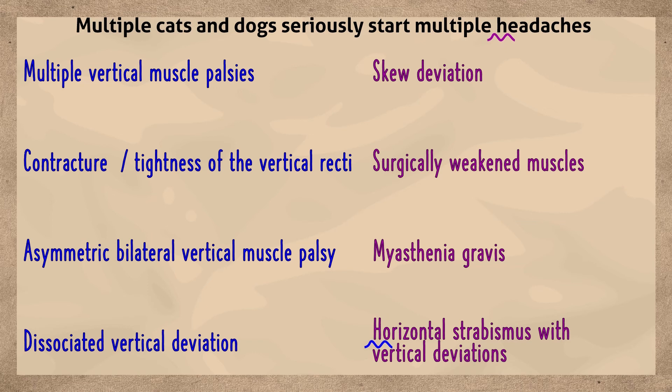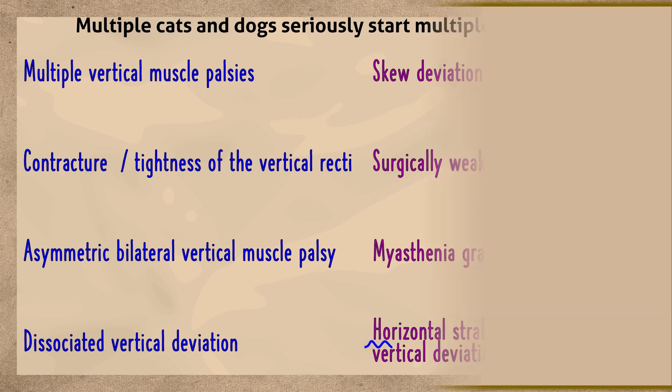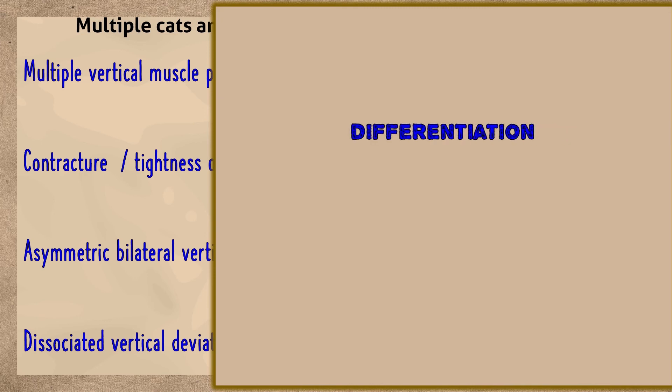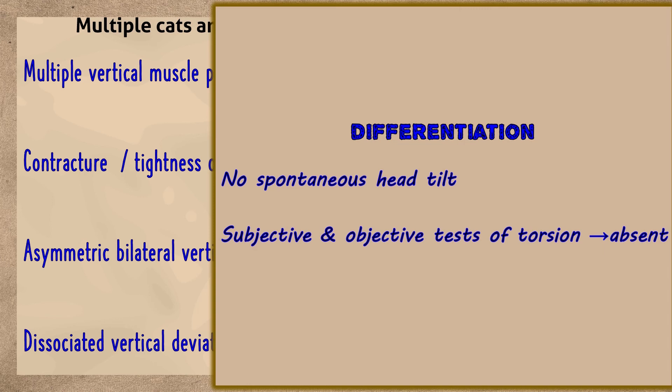Patients with horizontal strabismus often show small vertical deviations. The presence of a large horizontal deviation with a relatively small vertical deviation should alert the clinician to this entity. Here, they do not assume a spontaneous head tilt and subjective and objective tests of torsion are absent.